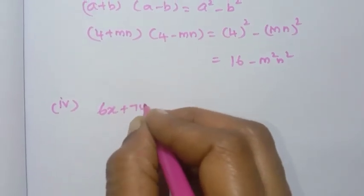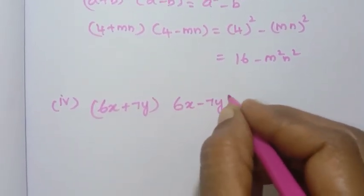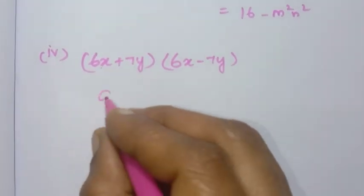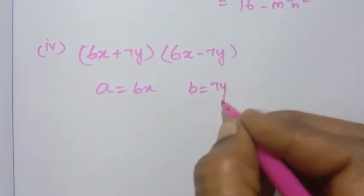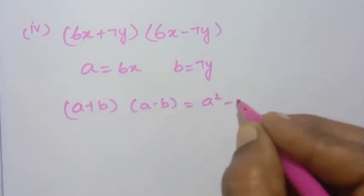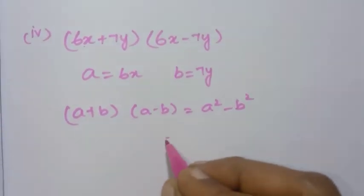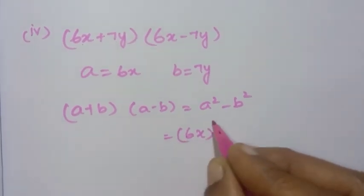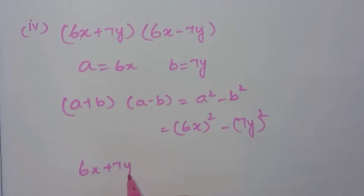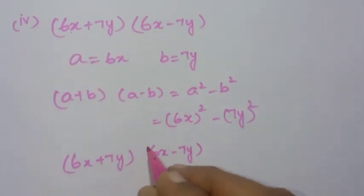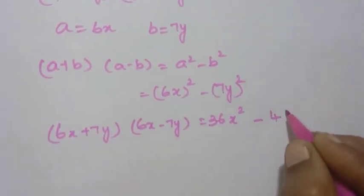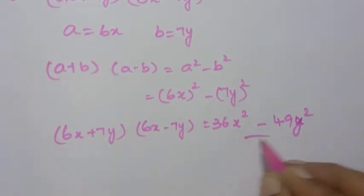Fourth sum: 6x plus 7y into 6x minus 7y. This matches a plus b into a minus b with a equals 6x and b equals 7y. Applying the formula: 6x squared minus 7y squared equals 36x² − 49y². That is the answer.